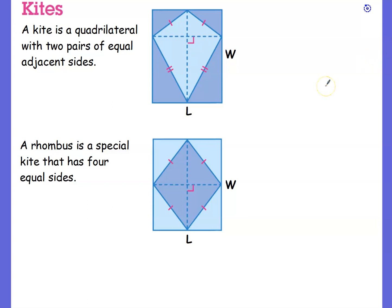Now, kites and rhombuses. A rhombus, by the way, is just a kite that has a special property that all the sides are the same. And this one's pretty simple as well. So here's the formula for the area of a kite and a rhombus.